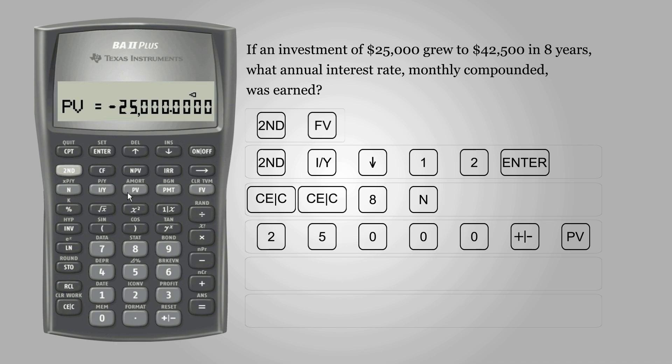Finally, enter 42,500 and press FV for future value. Note that the positive 42,500 means the amount of money which was received.